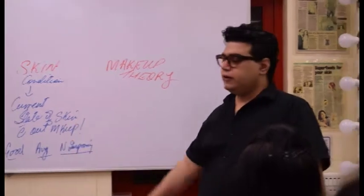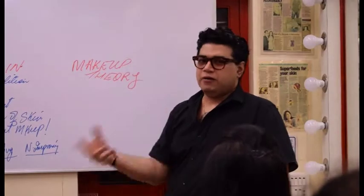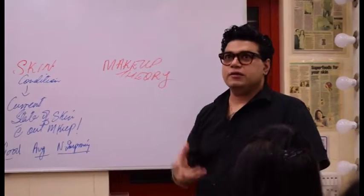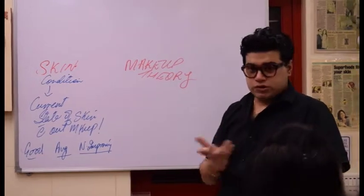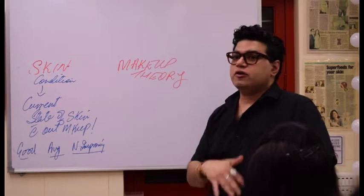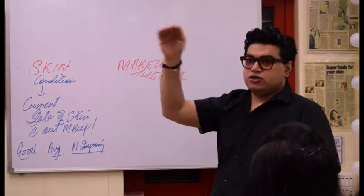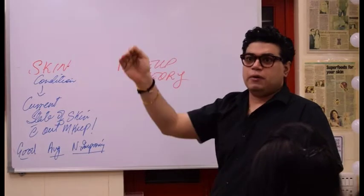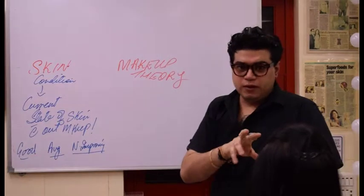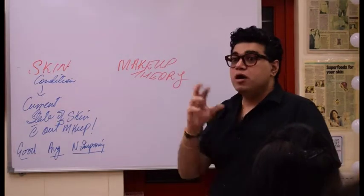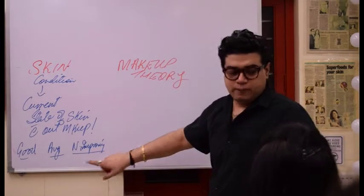When I say average, that's all of us — we all have some issues: under eyes, fine lines, whiteheads, blackheads, acne that comes and goes, open pores. And then Needs Improving is a category where you put people who have severe skin conditions, like somebody who has rosacea or port wine marks. Those people you would put in this category.